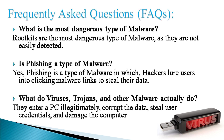What is the most dangerous type of malware? Rootkits are the most dangerous, as they are not easily detected. Is phishing a type of malware? Yes, phishing is a type of malware in which hackers lure users into clicking malicious links to steal their data. What do viruses, trojans, and other malware actually do? They enter a PC illegitimately, corrupt the data, steal user credentials, and damage the computer.